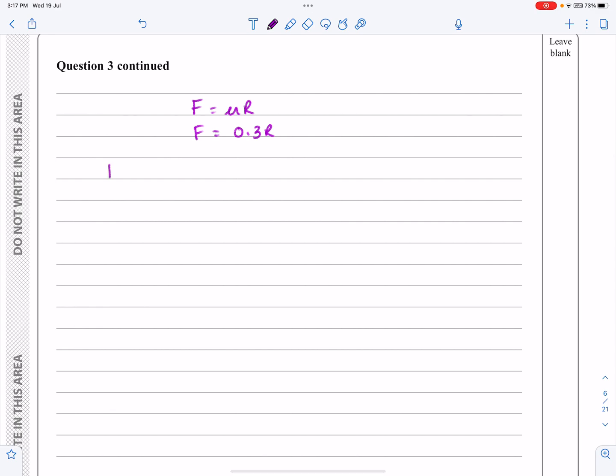number one I'll get that R is equal to 20G minus 200 sine 15 minus T sine 25 and I'm now just going to substitute that into